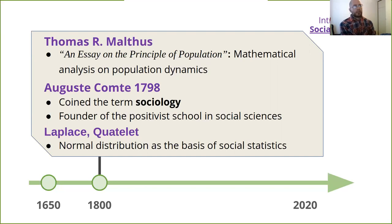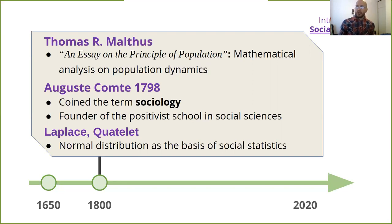Looking at Laplace and Ketele, before them Des Moivre and Gauss found the normal distribution, but Laplace and Ketele realized it is the basis of social statistics — that you can describe many different phenomena in society and they are all normally distributed. Ketele discovered many regularities of social numbers, finding them normally distributed, and wrote an influential book called Social Physics in 1835.